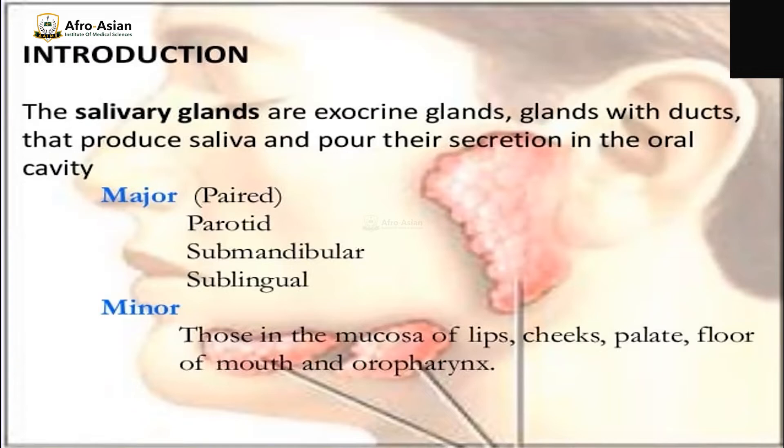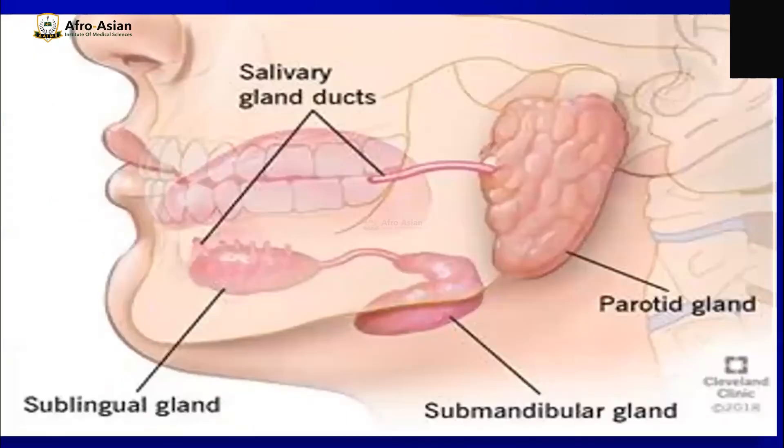The minor salivary glands are those found in the mucosa of the lips, cheeks, palate, floor of the mouth, and oropharynx.